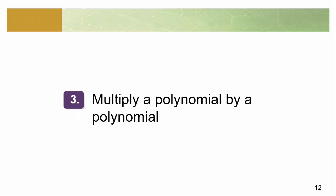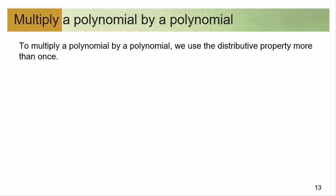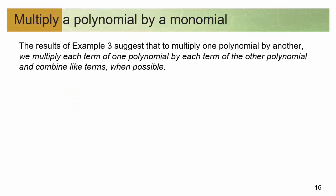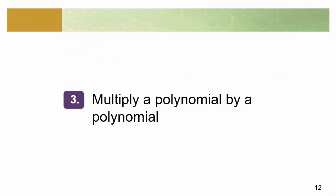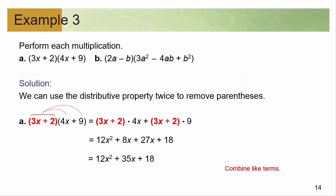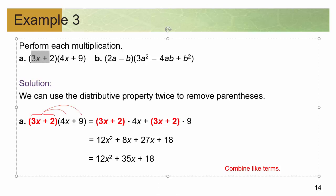What happens when we move up another notch and do a polynomial by a polynomial? Well, guess what — it's the same thing as the last result. We're just going to do it in bits and pieces. If this 3x was gone and it was just a 2, you would just distribute the 2. Same thing if the 2 was gone — you would just distribute the 3x.